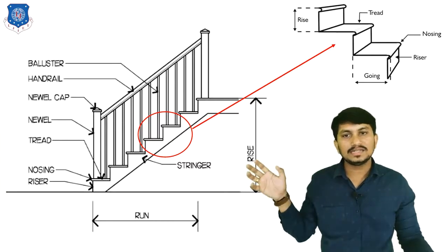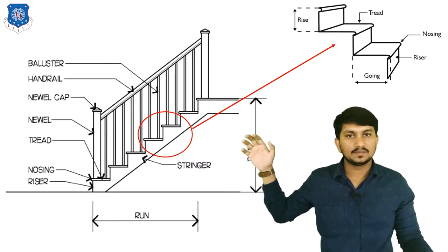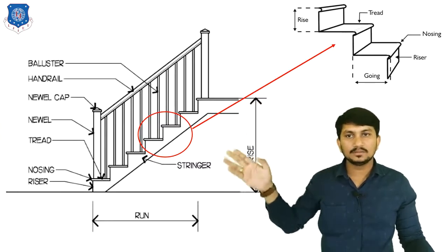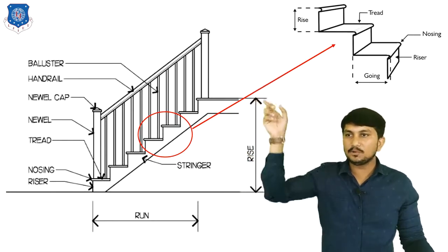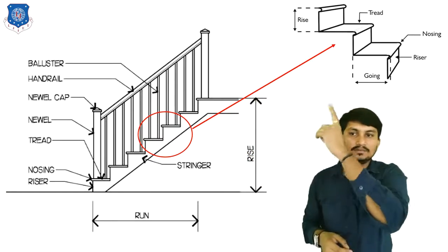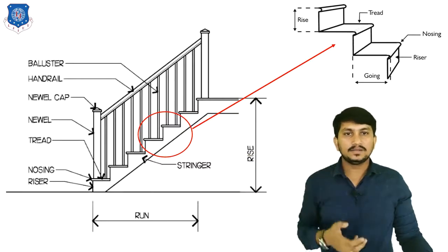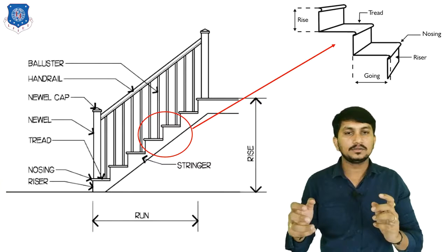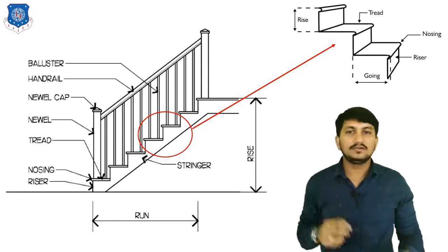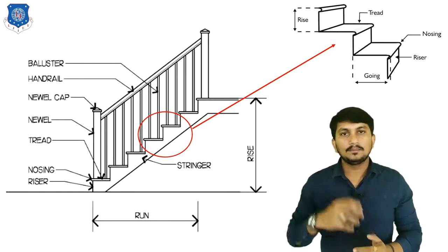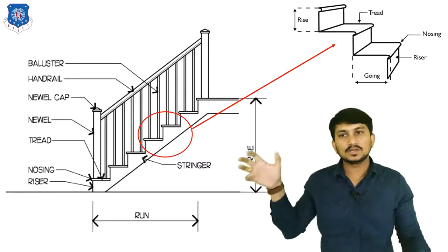The next component is the handrail, which is a rounded member usually supported by balusters — these are vertical members of metal form. One newel post is provided at the end and at the starting of the flight for guiding users through turns. For supporting the nosing, one member called molding — also called footier — is provided. That's all about the components of stairs.